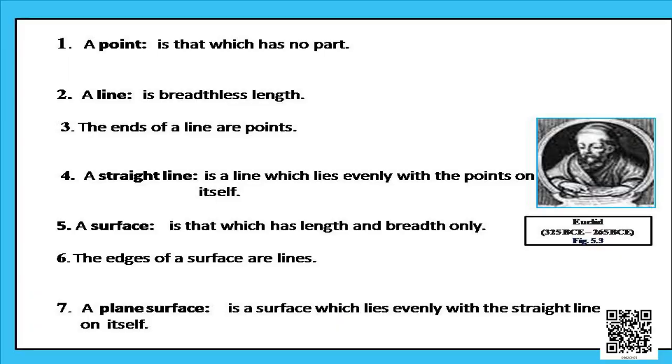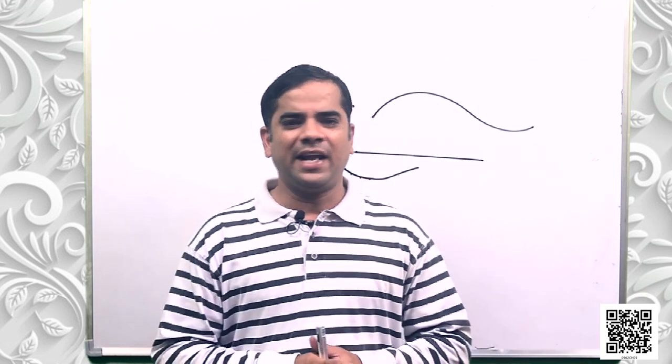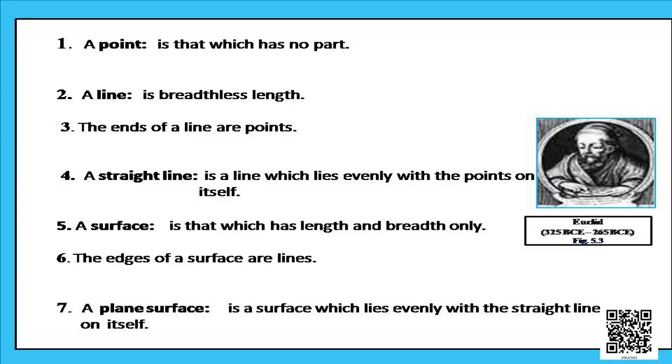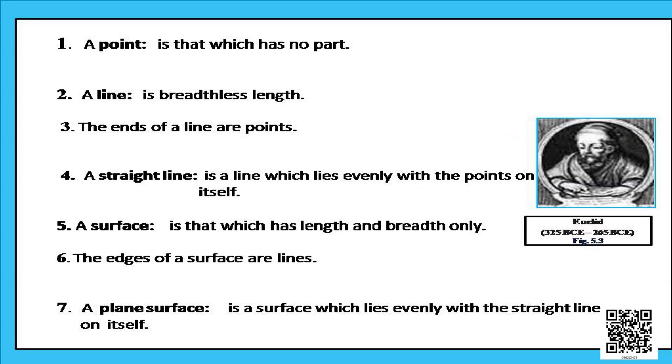The fifth definition says that a surface is that which has length and breadth only — two dimensions, a length and a breadth, as we discussed with a square and a rectangle. The sixth definition says the edges of a surface are lines — the surfaces meet at a line.